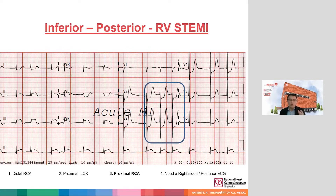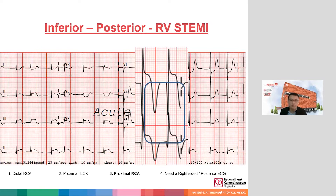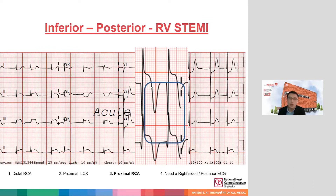If you imagine taking the posterior leads and flipping them upside down, you can see ST elevations very grossly. V2 and V3, which look at the heart from the front, when flipped around actually look at the heart from the back. This posterior territory then shows ST elevations consistent with a posterior ST elevation MI.